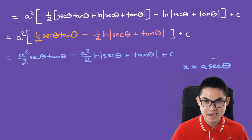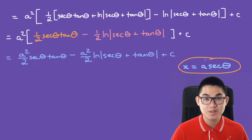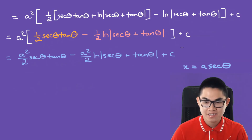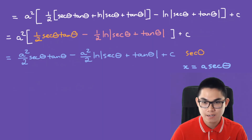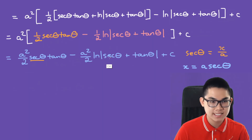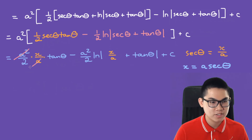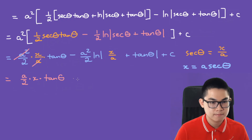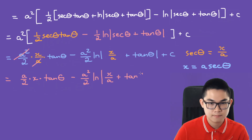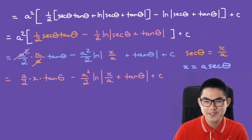Remember, at the beginning of the video we said x equals a times secant, which means secant equals x over a. Let's replace secant with x over a. The a squared will cancel with this a, so we have a over 2 times x times tan, minus a squared over 2 times the ln of x over a.